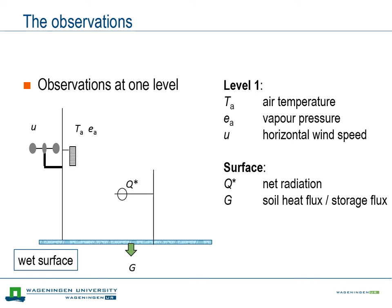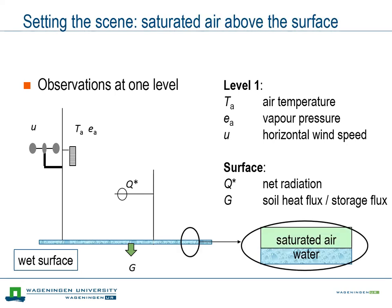Note that the surface soil heat flux should actually be interpreted more generically. It is the change in heat storage of the material below the surface — that material could be a water body, a shallow or a deep lake, or a thin water layer on top of the soil. Coming back to the exact conditions: if the surface is wet and air and water surface are in equilibrium, the air just above the surface is saturated with water vapor. So if we would know the surface temperature, we would know the amount of water vapor in the air. But with single level observations, we do not know the surface temperature nor the surface moisture content.